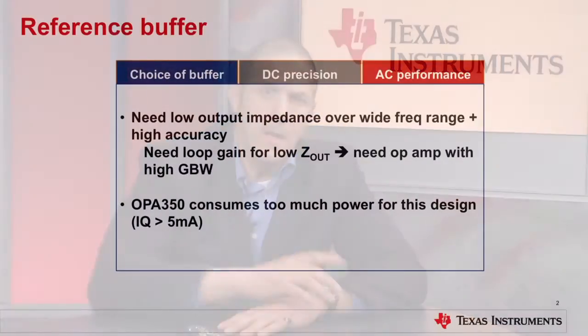We were talking about designing the optimum signal chain with respect to lowest noise and lowest distortion. We picked, out of four designs, the one with the lowest noise and lowest distortion — that's the goal. We're going to continue on with this last segment, which talks about the reference buffer.